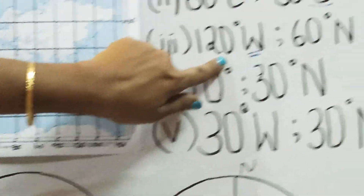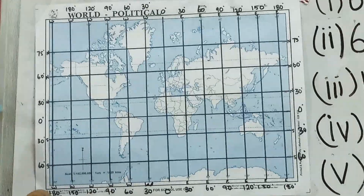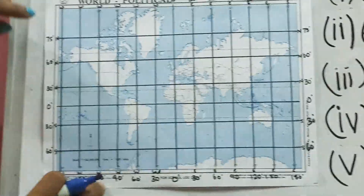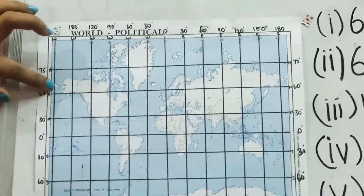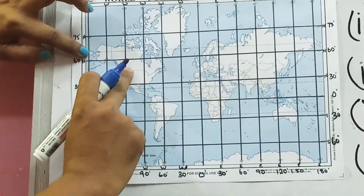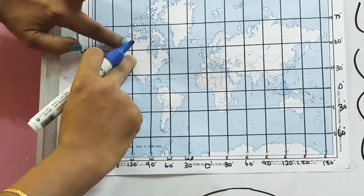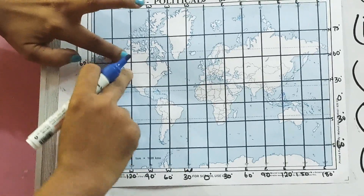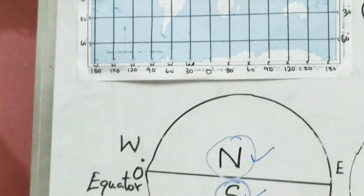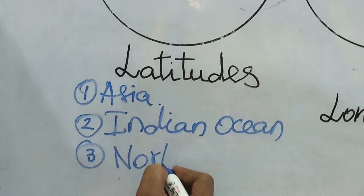Third: 120 degree west and 60 degree north. 120 degree west lies here and 60 degree north is here. Move along these lines — where they meet is North America.